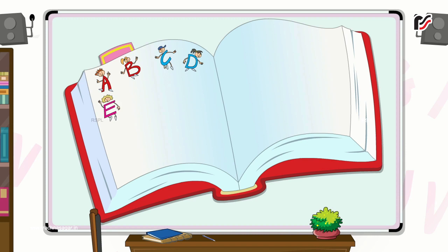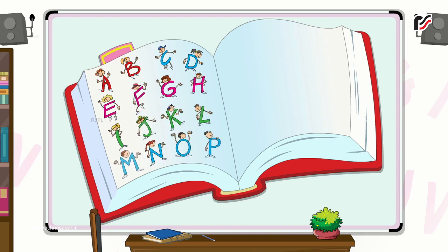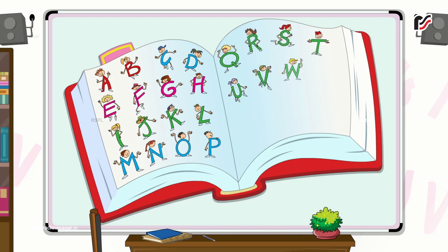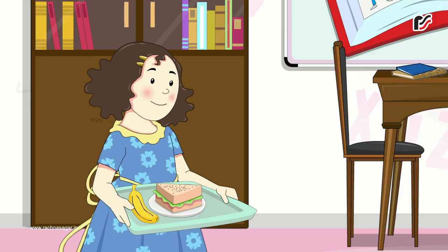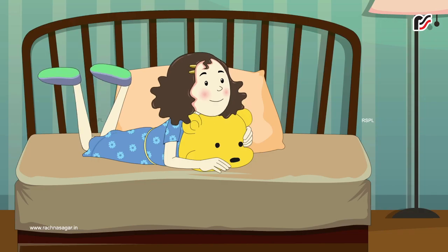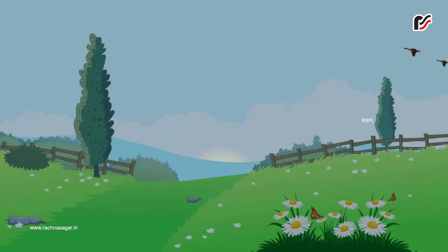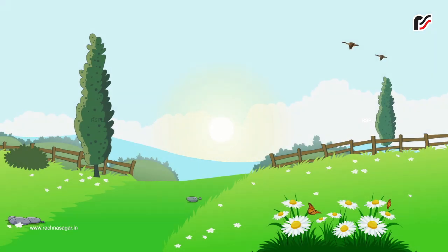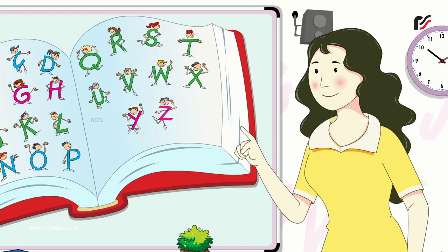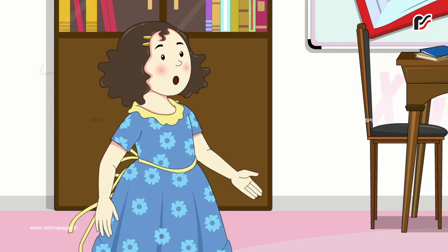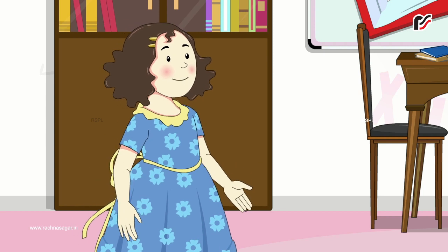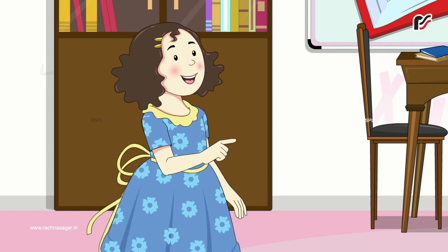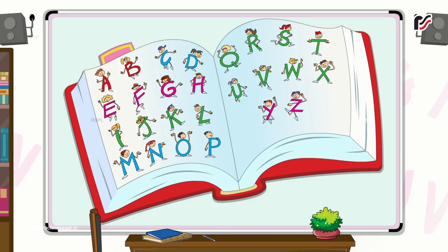A, B, C, D, E, F, G, H, I, J, K, L, M, N, O, P, Q, R, S, T, U, V, W, X, Y, Z. Sugar on your bread — if you don't like it, better go to bed. Every morning come to me, I will teach you ABCD. Happy, happy I shall be when I know my ABCD.